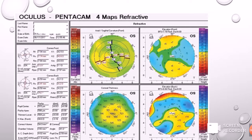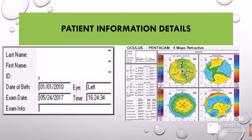This is the typical Pentacam printout of the corneal tomography, in which we can see certain columns and four maps which are presented in a typical Pentacam printout. In part 2 of corneal topography and tomography, I explained about these maps and their basics in detail. I would advise all viewers to visit that video first before entering into part 3. So let us start one by one and see what these printouts consist of.